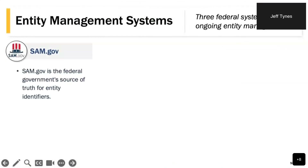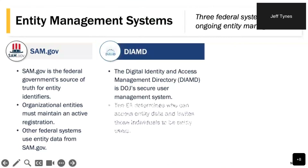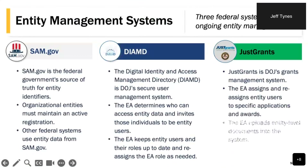SAM.gov is the federal government's source of truth for entity identifiers. Organizational entities must maintain an active registration and ensure their information remains current. The Digital Identity and Access Management Directory, or Diamond, system is the DOJ's secure user management system. The entity administrator determines who should have access to entity data and invites those individuals to be entity users, keeping their roles up to date and reassigning the entity administrator role as necessary. JustGrants is the DOJ grant management system, where the entity administrator assigns and reassigns entity users to specific applications and awards, and uploads entity-level documents.